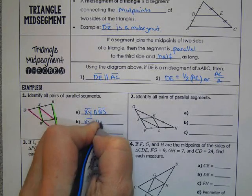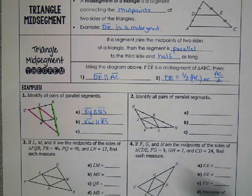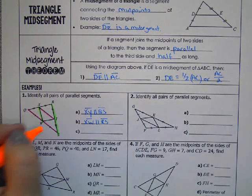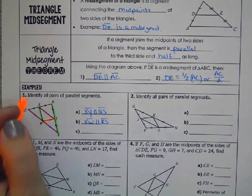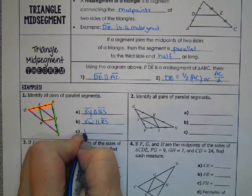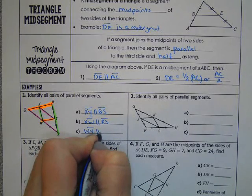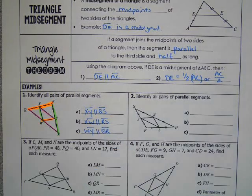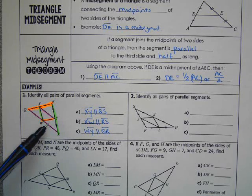And finally, WY would be parallel to QR. So any of these three middle segments could be used as a midsegment, depending on which way you were looking at the triangle.